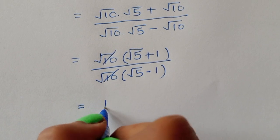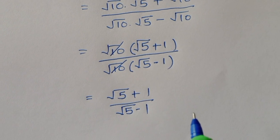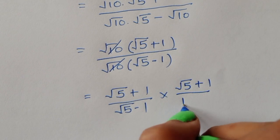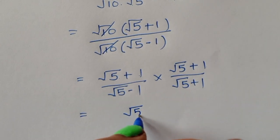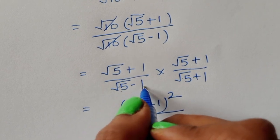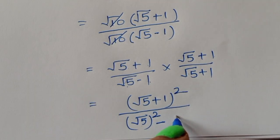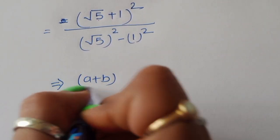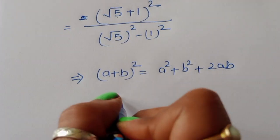After cancelling square root of 10, we get square root of 5 plus 1 divided by square root of 5 minus 1. Now we multiply numerator and denominator by the conjugate, square root of 5 plus 1. The numerator becomes square root of 5 plus 1, whole square. The denominator becomes square root of 5 minus 1 times square root of 5 plus 1, which is a squared minus b squared, where a is square root of 5 and b is 1, giving 5 minus 1 squared.